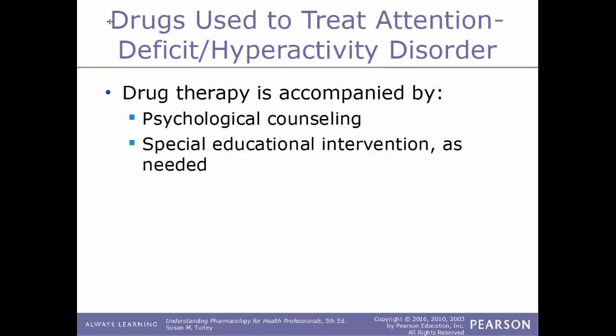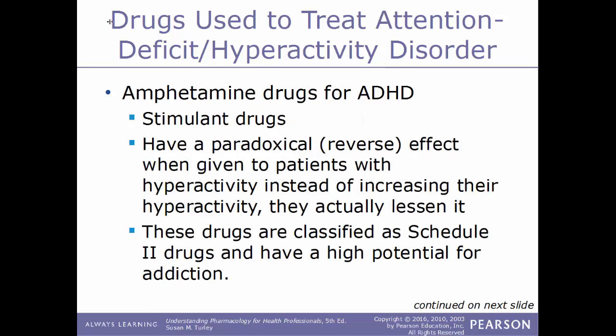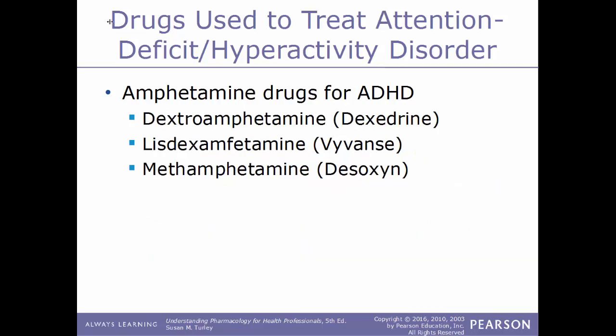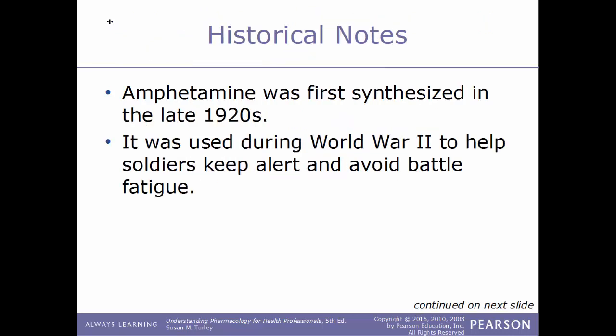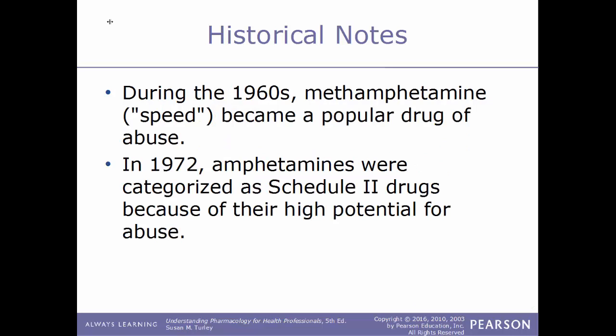Amphetamine drugs, a CNS stimulant, are one kind of drug used to treat ADHD. They have a paradoxical effect: even though they are stimulants, they actually lessen hyperactivity. These drugs are Schedule 2 due to high addiction potential. Examples include dextroamphetamine (Dexedrine), lisdexamfetamine (Vyvanse), and methamphetamine (Desoxyn). Amphetamine was first synthesized in the late 1920s, used during World War II to help soldiers stay alert, and became a popular drug of abuse in the 1960s known as 'speed.' Amphetamines were categorized as Schedule 2 in 1972.